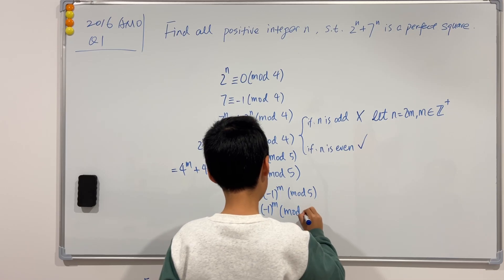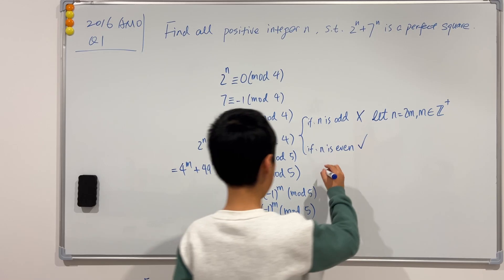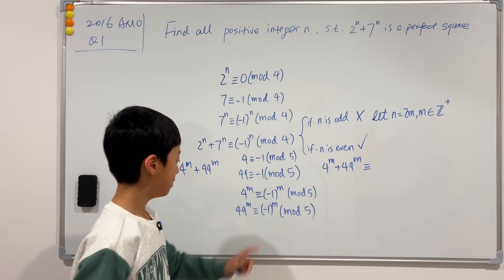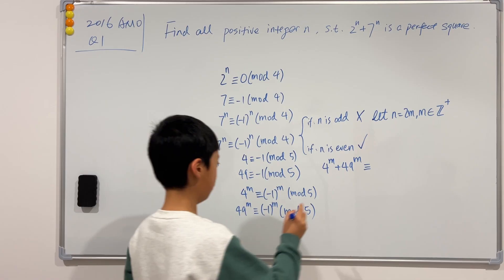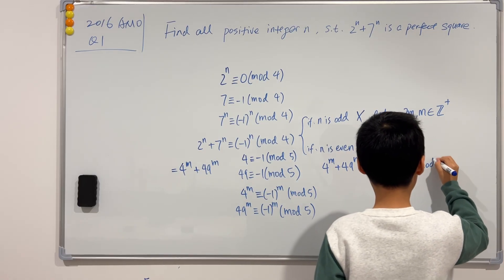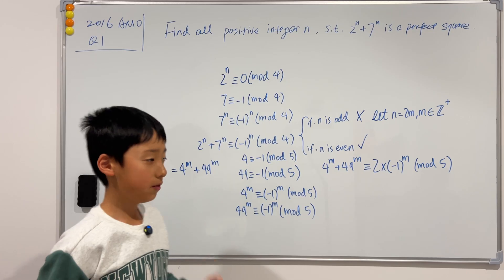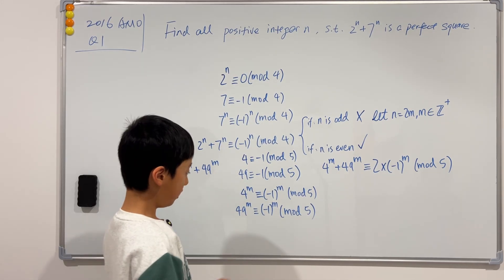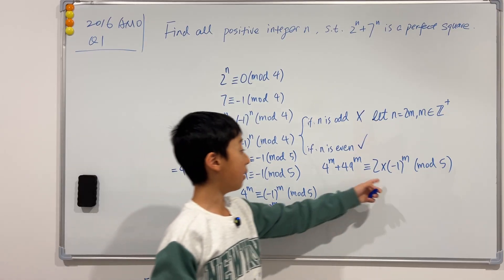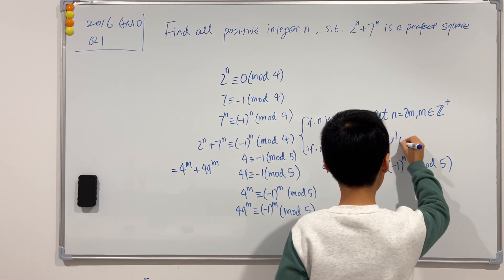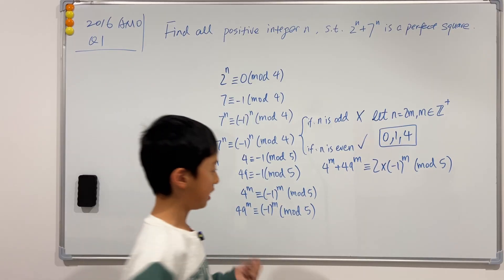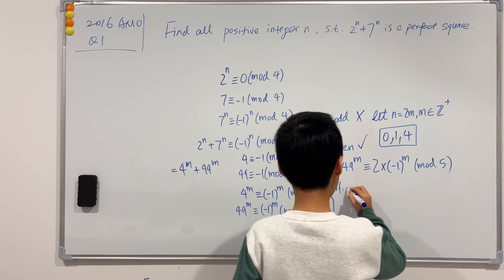So now, if we add these two up together, then we see that this is congruent to, if we add these up, then there will be 2 of negative 1 to the m, mod 5. And if you just want to know, this is just a little note. But if a perfect square is congruent to something mod 5, then this something has to be either 0, 1, or 4. And now, we can do the same thing over here. So we can split it into cases.